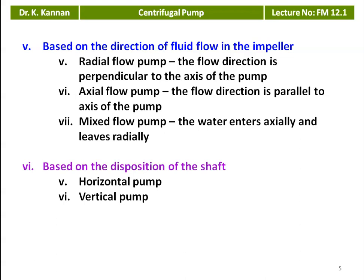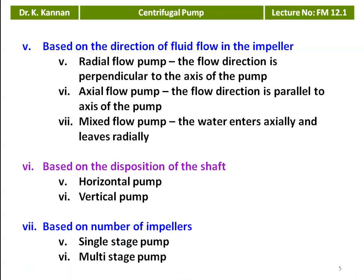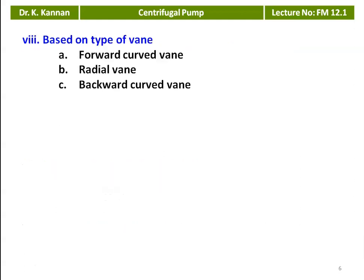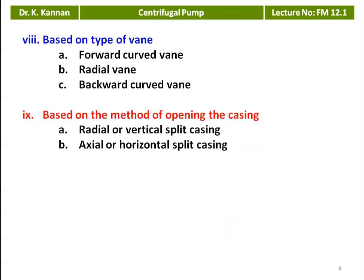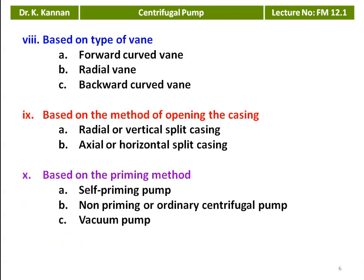Based on the disposition of the shaft: horizontal pump (shaft is horizontal) or vertical pump (shaft is vertical). Based on the number of impellers: single stage pump or multi-stage pump. Based on the type of blade or impeller vane: forward curved vane, radial vane, and backward curved vane. Based on the method of opening the casing: radial split casing or axial (horizontal) split casing — vertical direction is called radial split and horizontal direction is called axial split. Based on the priming method: self-priming pump, non-priming or ordinary centrifugal pump, and vacuum pump.